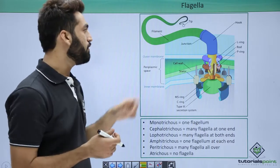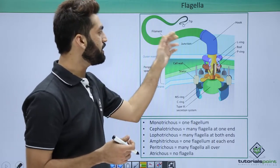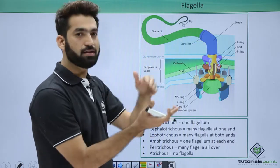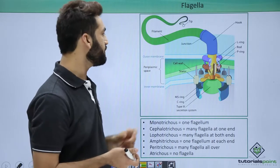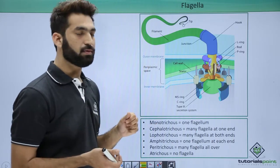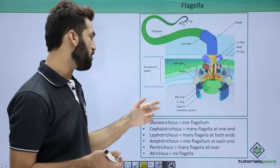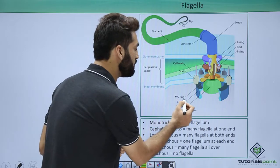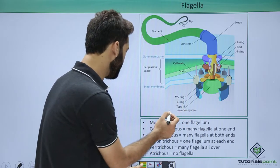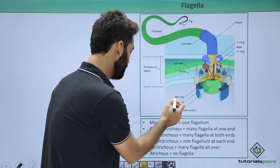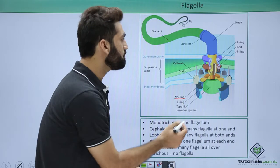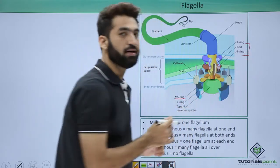The hook is the junction between the filament and the bacterial surface. The basal body is in the form of rings — we'll be talking about MS rings and L and P rings.